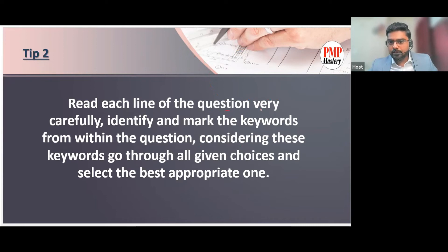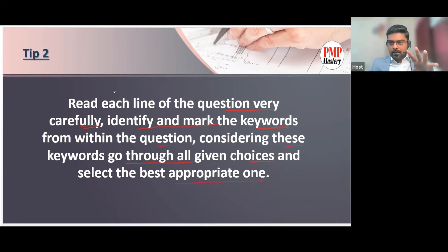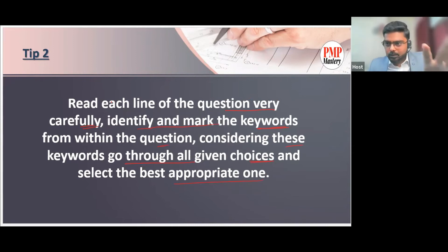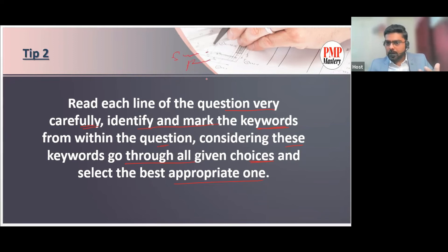Read each line of the question very carefully. Identify and mark the keywords within the question, and considering those keywords, go through all given choices and select the best appropriate answer. Once you identify the question is based on Agile, start identifying keywords — is it talking about a Scrum Master, Product Owner, Agile Coach, or Agile team?